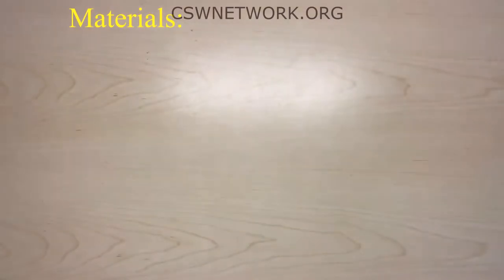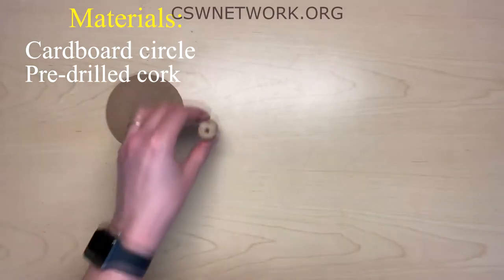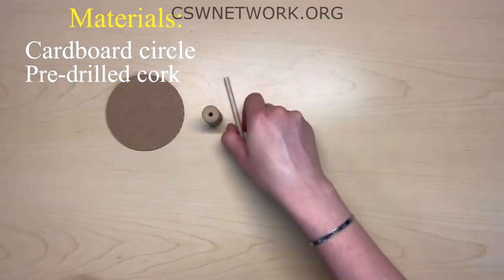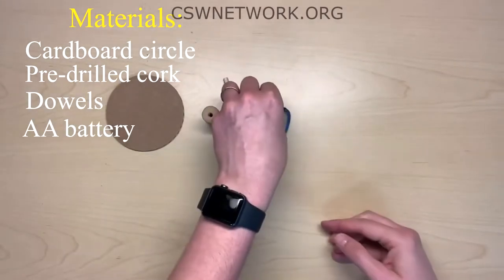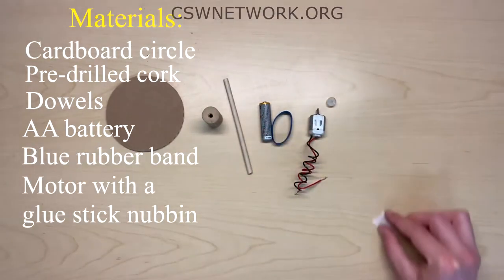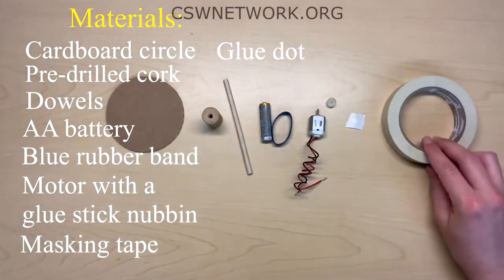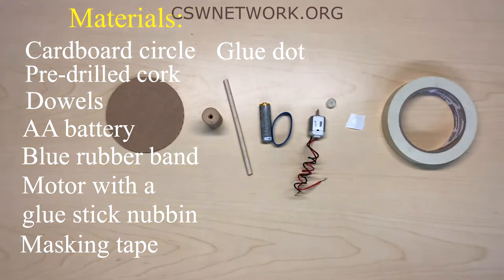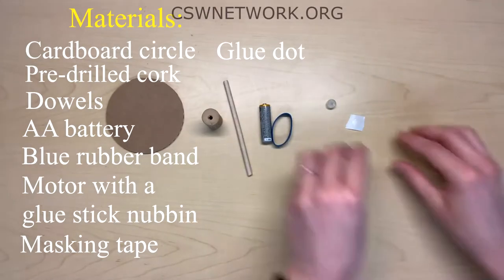Materials we're going to be using to build the stroboscope are cardboard circle, pre-drilled cork, dowel, AA battery, a blue rubber band, a motor with a glue stick nubbin, a glue dot, masking tape as well. And this project also requires the use of a black marker, crayon or color pencil which are not included with this project and access to a spinning fan or a wheel.